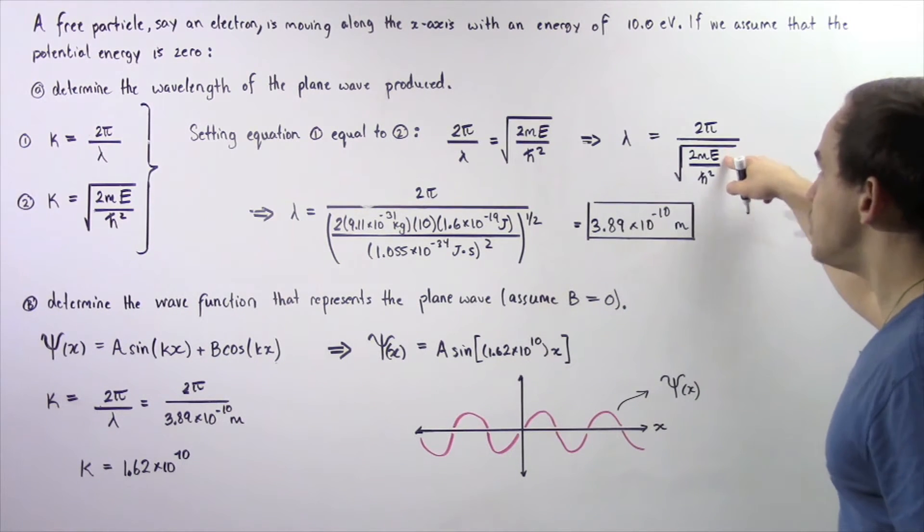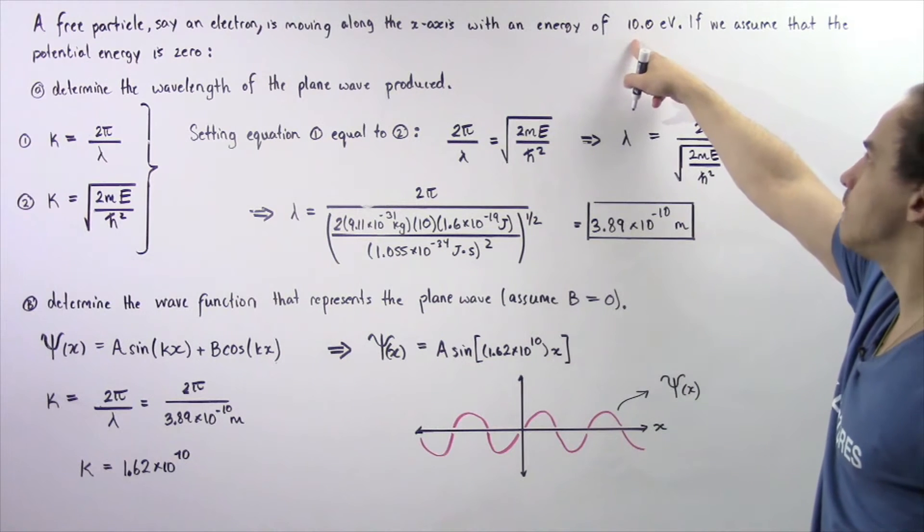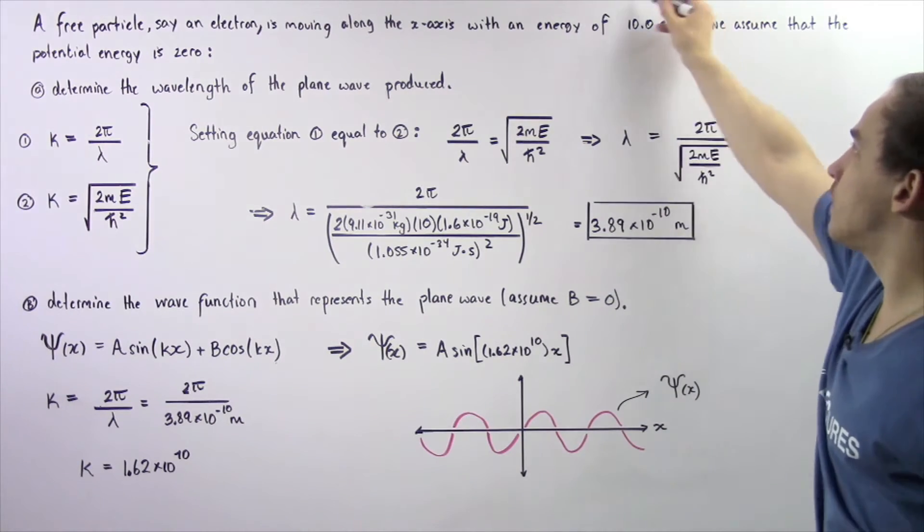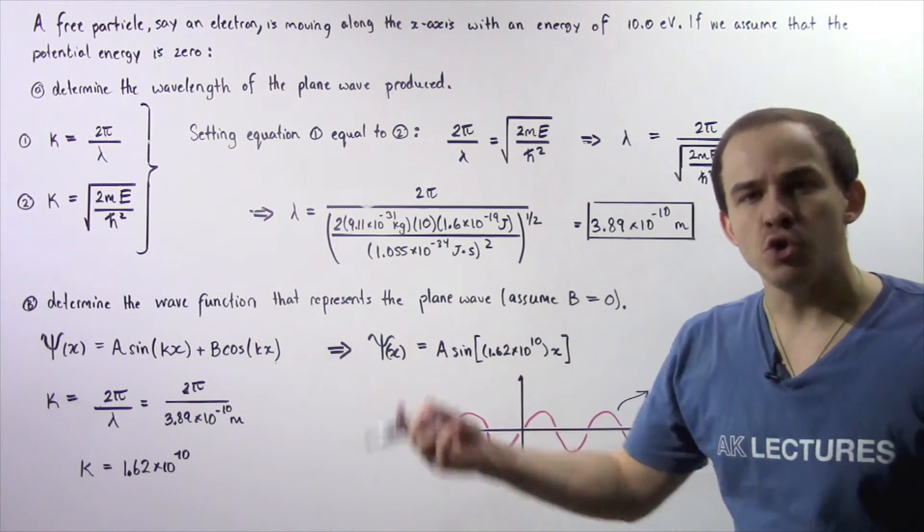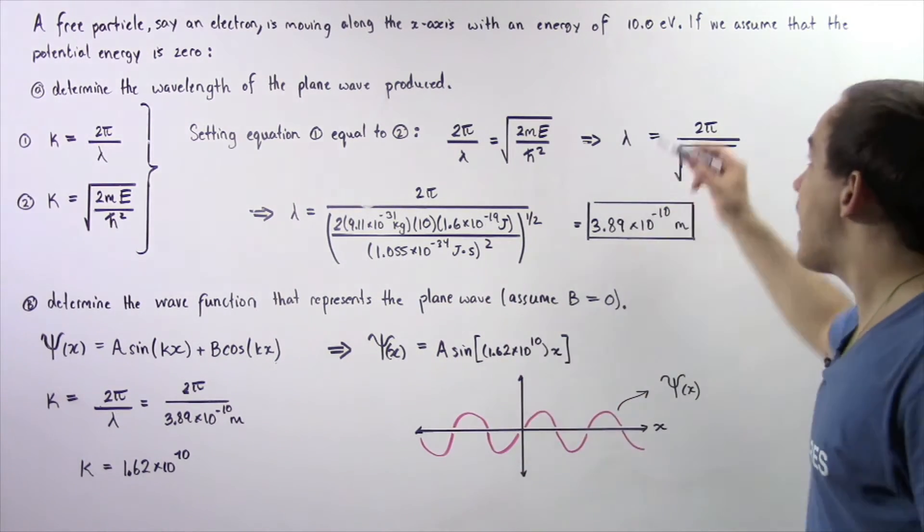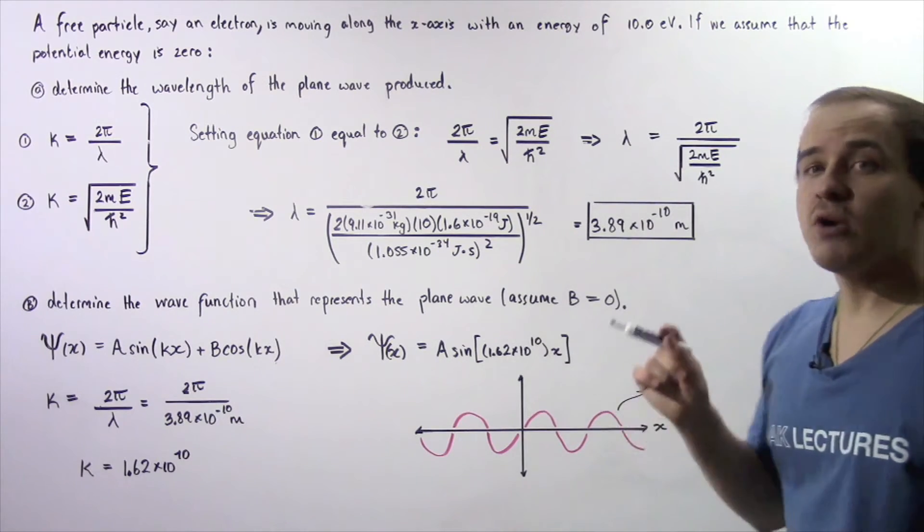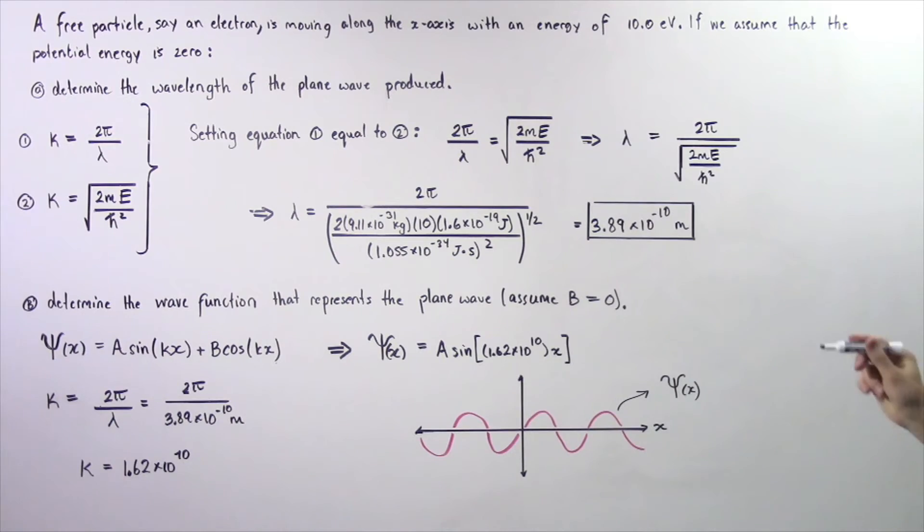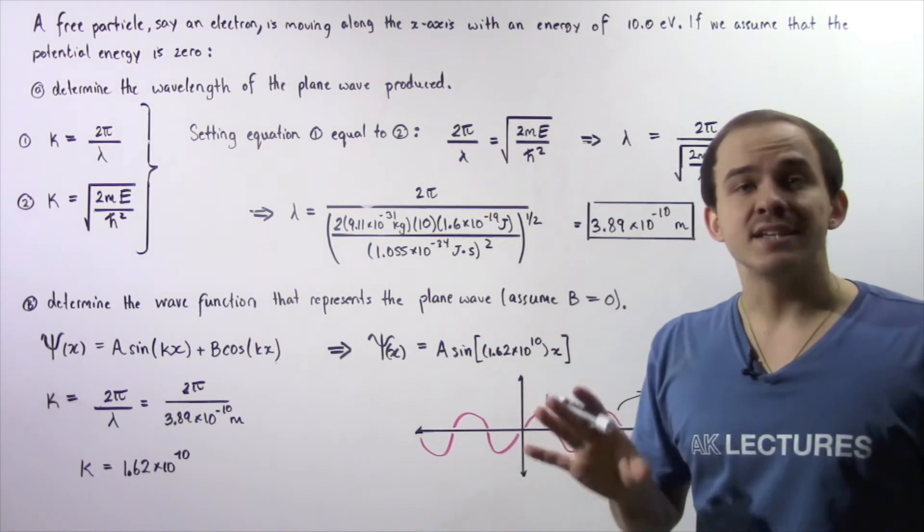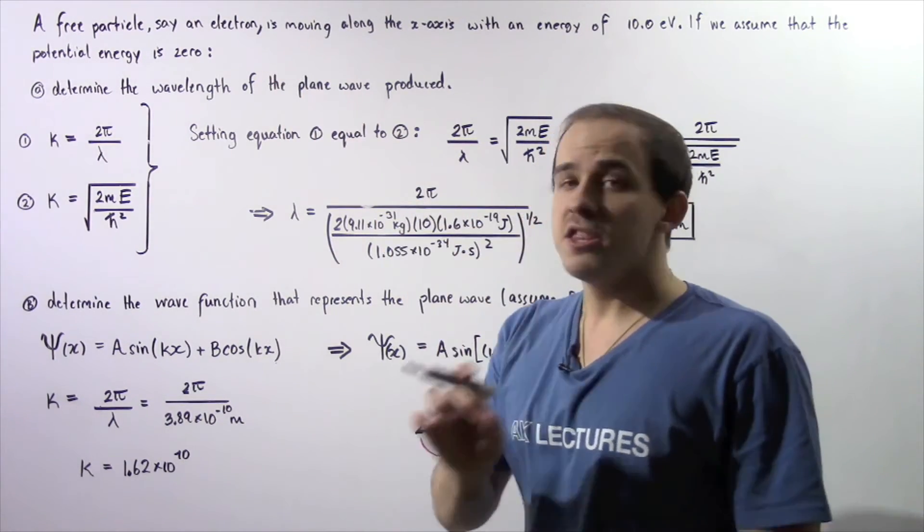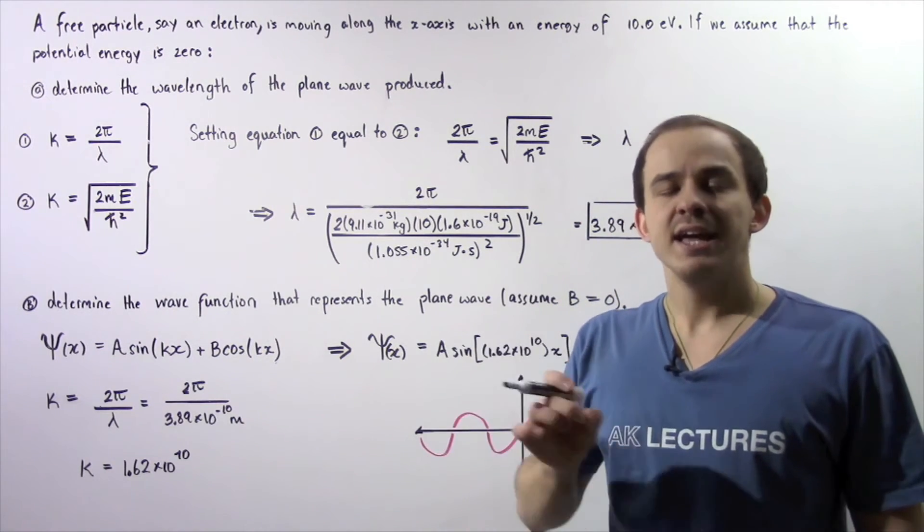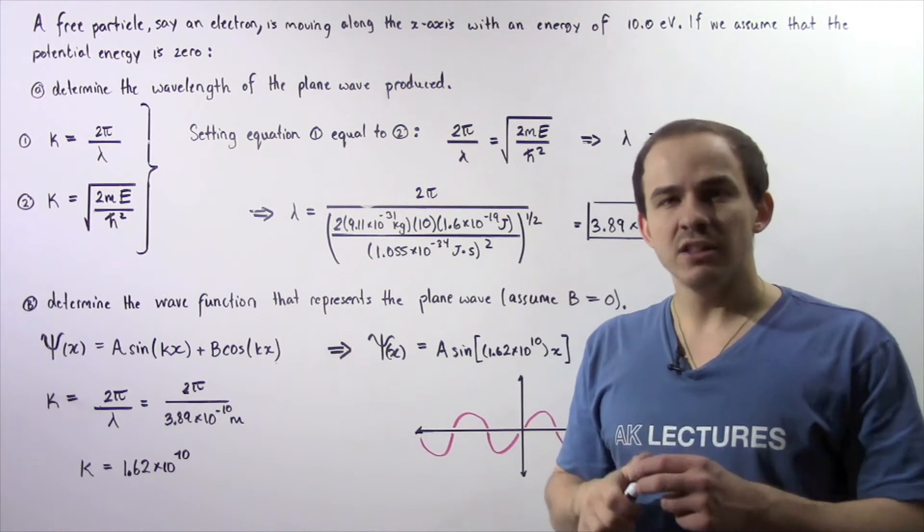Now our energy is given in electron volts. So to use the energy, we have to convert it from electron volts to joules. To do that, we multiply 10 by 1.6 times 10 to the negative 19 joules. Now m is the mass of our particle. Because we have an electron, the mass is 9.11 times 10 to the negative 31 kilograms.